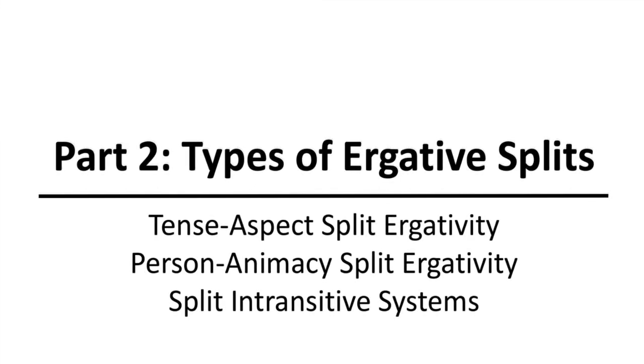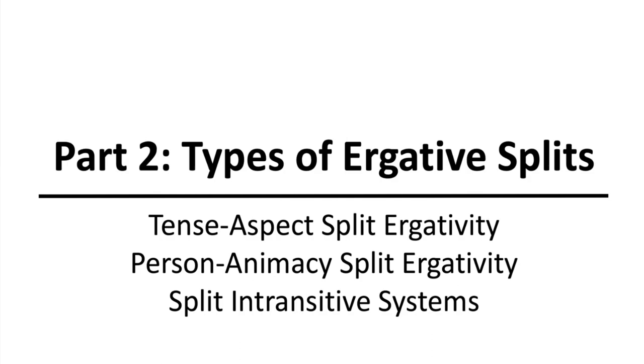In part two, we will discuss the different types of ergative splits and the different ways in which ergativity can manifest. We will specifically touch on tense aspect-based split ergativity, person animacy-based split ergativity, and split intransitive systems.